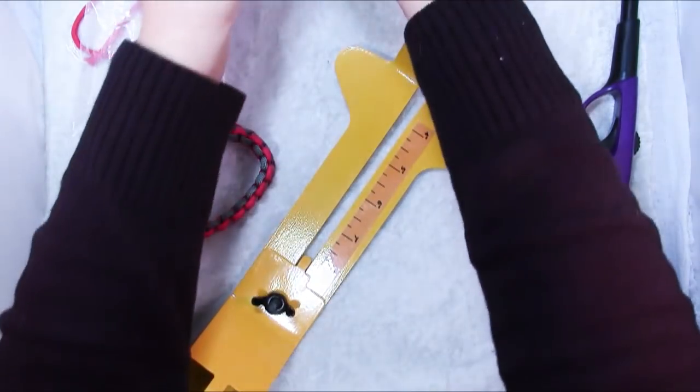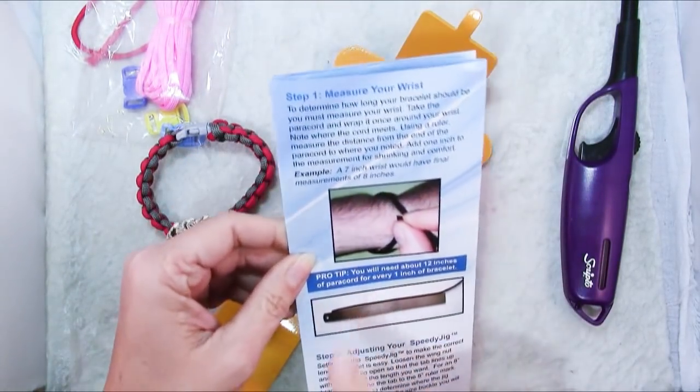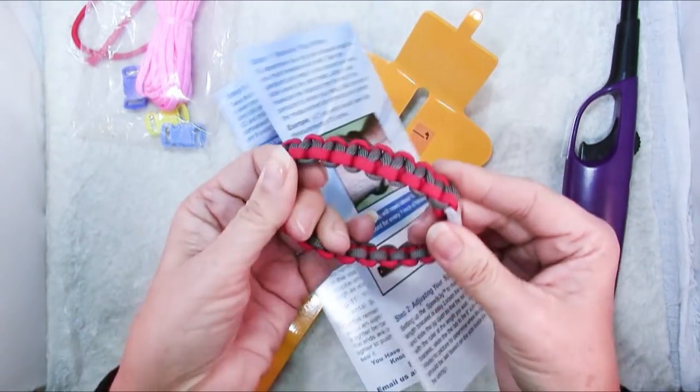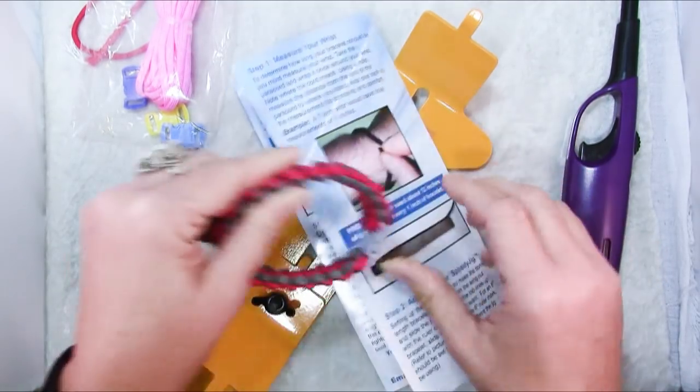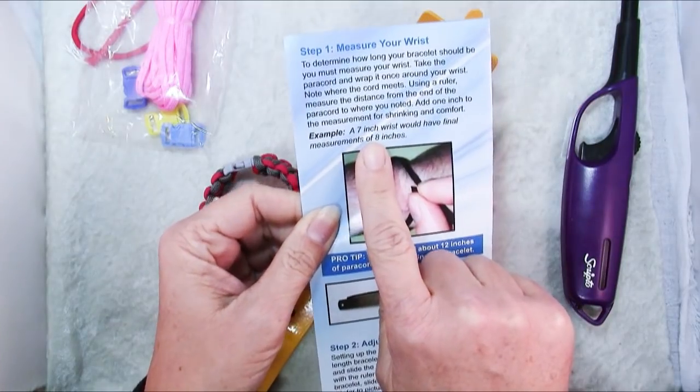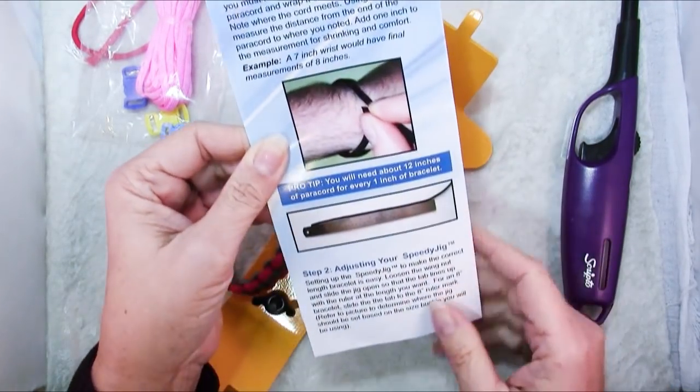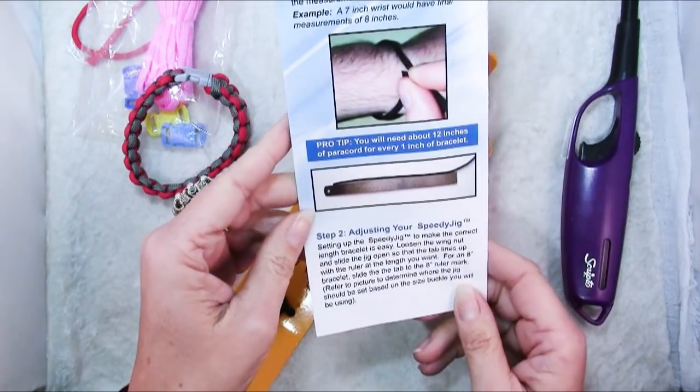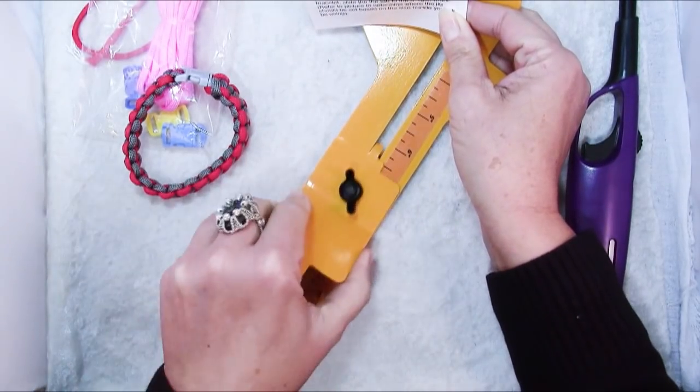Then you set your SpeedyJig according to the directions. Now remember when I've talked to you about sizing bracelets that the thicker the bracelet, the longer you need to make it. And this has quite a bit of thickness, so it makes sense that they say if you want to make a bracelet for seven-inch wrist, you need to make it eight inches long. And then you adjust your jig for the length that you want, and you just loosen this wing nut and then it slides.